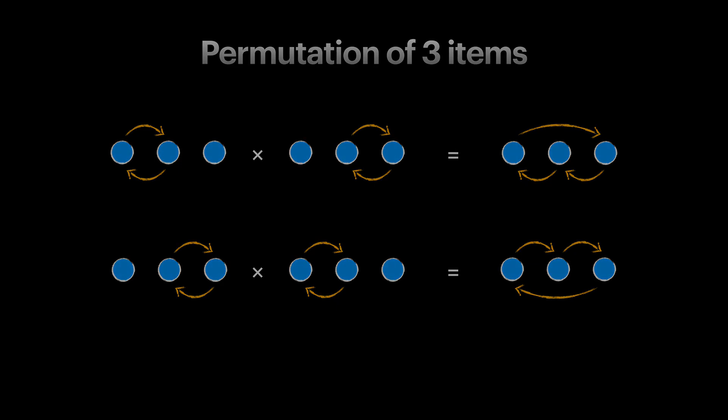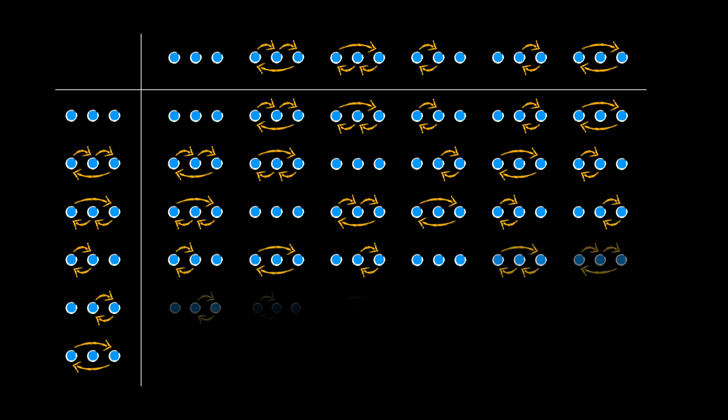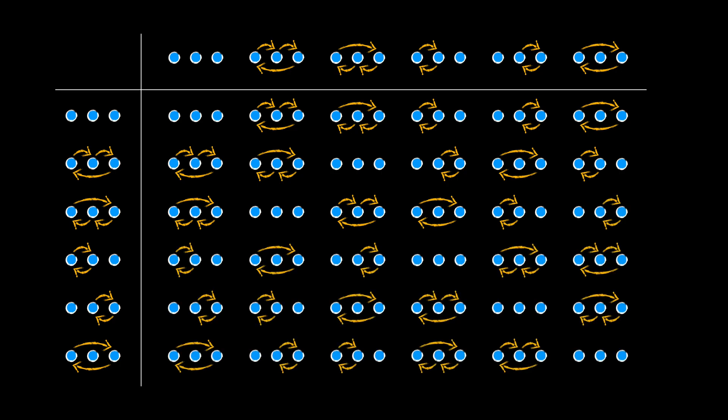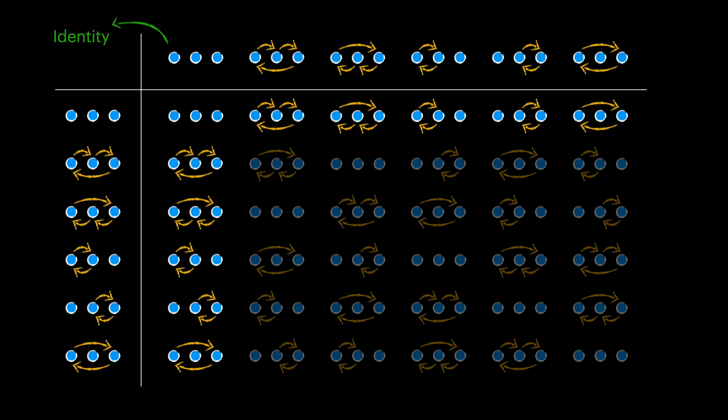Let's move on. Let's draw the composition table for permutation of three items, similar to what we did for triangle transformations. Keep in mind that doing nothing is always part of our actions. And for permutation, it is the identity action as well, because composing doing nothing with any permutation gives us the same permutation again.